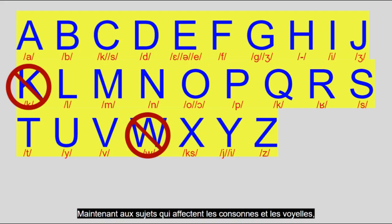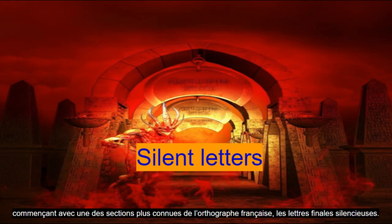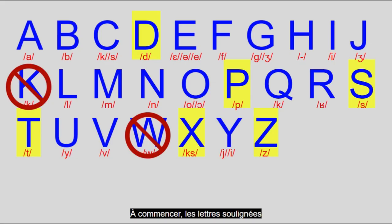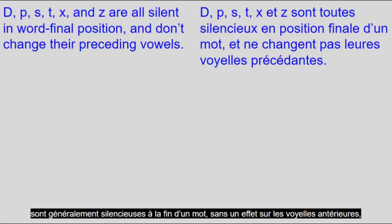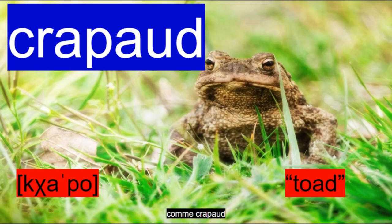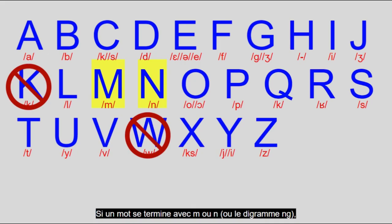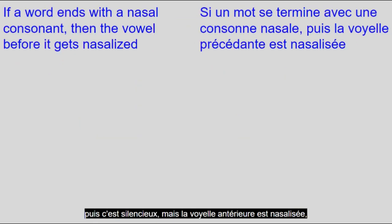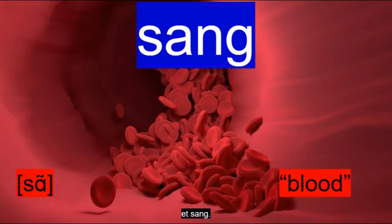Now onto matters that affect both consonants and vowels, starting with one of the most famous parts of French orthography: the silent final letters. The highlighted letters are usually silent at the end of a word, with no effects on the preceding vowels, like crapaud and lait. If a word ends with M or N, or the digraph NG, then it's silent, but the vowel before it is nasalized, like mouton and sang.